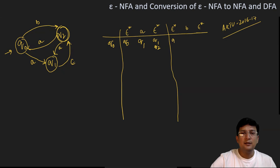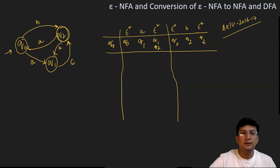Similarly, the Epsilon closure of Q0 on getting symbol B moves to Q2, and the Epsilon closure of Q2 will be Q2 only. So we have seen the transitions with Q0. Let's move to Q1. The Epsilon closure of Q1 is Q1 and Q2, which we have already computed.